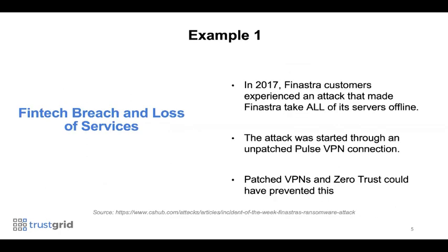Here are some concrete examples of the way networks have failed. Finastra is a huge fintech provider — a $2 billion a year company operating in 130 countries with 10,000 employees and thousands of bank customers. In 2017, they were attacked. The attack was discovered when all of their customers' data was being encrypted in a ransomware attack spreading so fast it forced Finastra to take all of its servers offline, and they were down for the rest of the day to remediate.